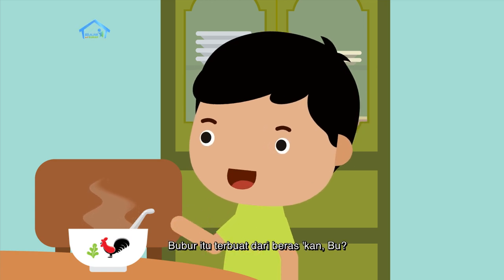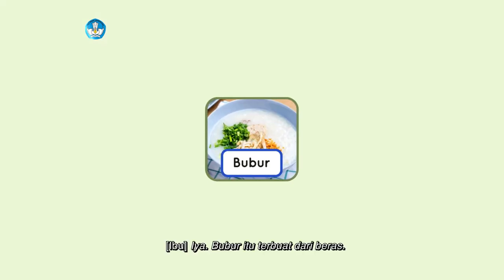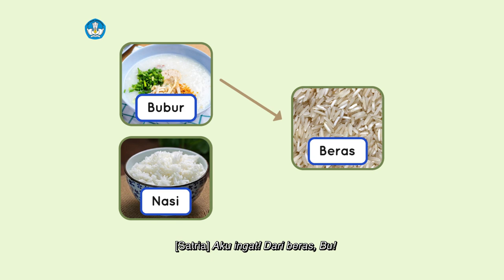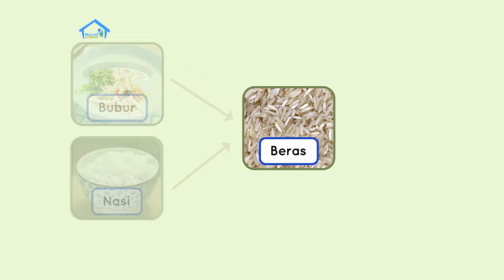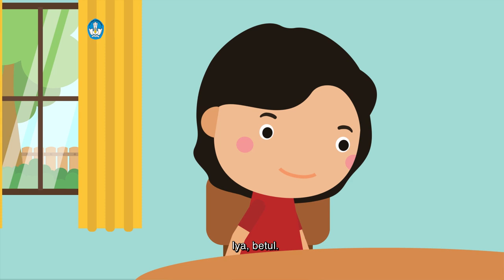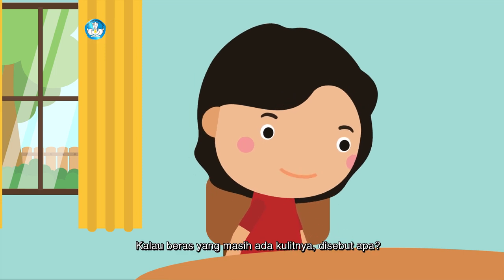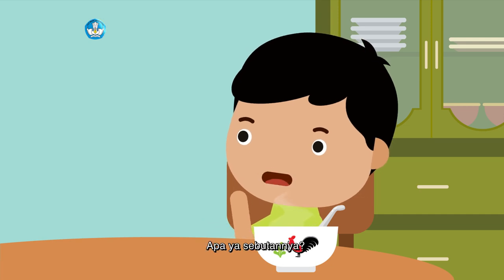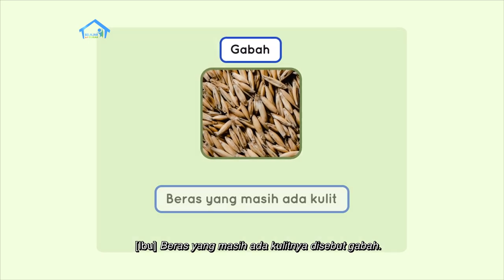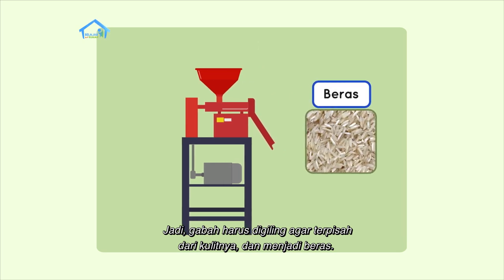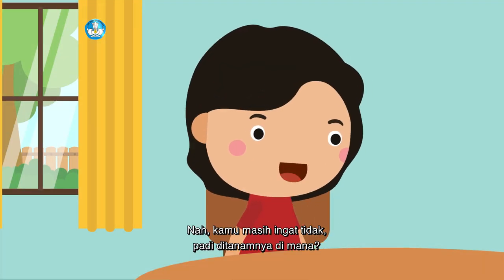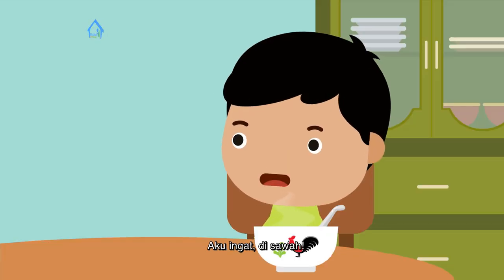Bubur itu terbuat dari beras kan, bu? Iya, bubur itu terbuat dari beras. Kalau nasi, kamu ingat tidak terbuatnya dari apa? Aku ingat, dari beras, bu. Kalau beras, asalnya dari mana? Dari padi, bu. Iya, betul. Kalau beras yang masih ada kulitnya disebut apa? Tidak tahu, bu. Beras yang masih ada kulitnya disebut gabah. Jadi, gabah harus digiling agar terpisah dari kulitnya dan menjadi beras. Kamu masih ingat tidak padi ditanamnya di mana? Aku ingat, di sawah.